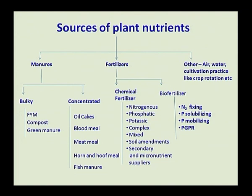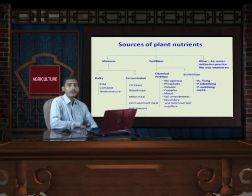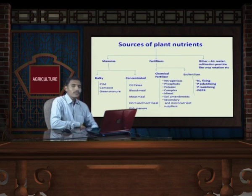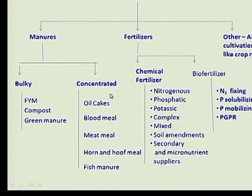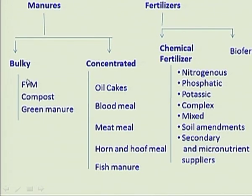Manures are the wastage of animal and plant and decomposed portion which are used for plant nutrition. Fertilizers are the industrially made chemical elements which are used for plant nutrition. Under manures, we mainly discuss about bulky manures and concentrated manures. In bulky manures, FYM, compost, and green manures are important ones.